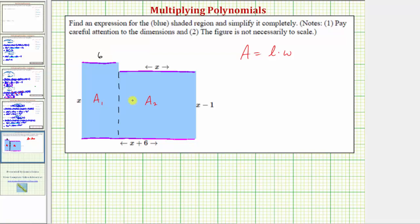This is all the information we need to find the total area. A sub one, the area of the rectangle on the left, is equal to x times six square units, or six x square units. The area of the rectangle on the right, A sub two, is equal to x units times x minus one units, so we'd have x times the quantity x minus one square units.